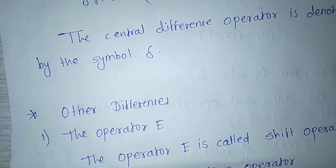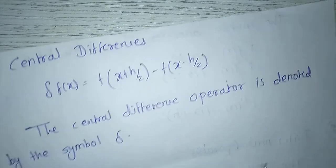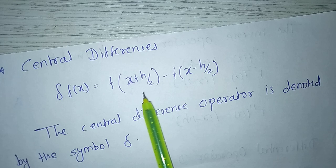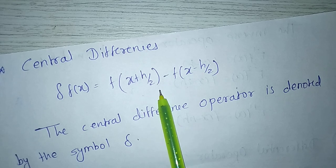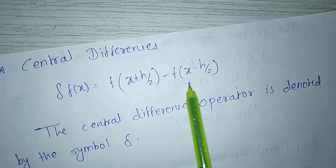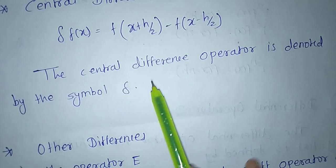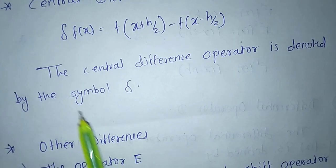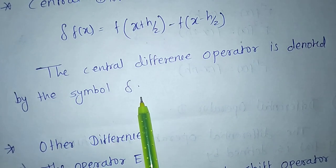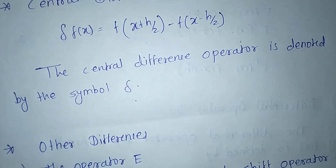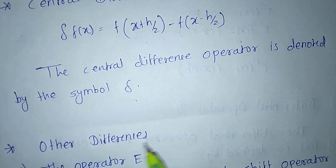Central difference: the central difference is defined as δf(x) = f(x + h/2) - f(x - h/2). The central difference operator is denoted by the symbol δ (small delta), whereas the forward difference uses capital delta Δ.